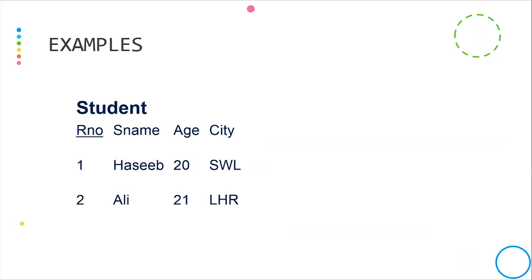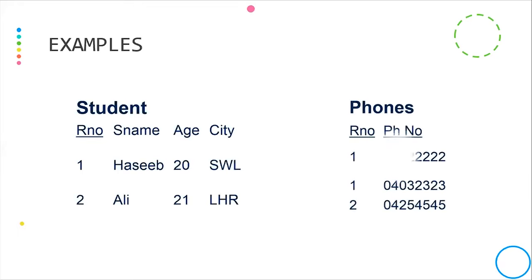For example, the columns are: row, registration number, student name, age, and city. There are two students listed here. One is Haseeb and the other is Ali. Haseeb's age is 20, city is Sahiwal. Ali has registration number 2, age 21, city Lahore. Now we can see their phone numbers.